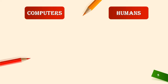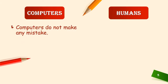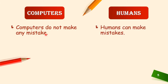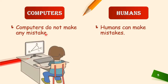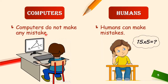Next: computers do not make any mistakes. If you want to add or multiply 10-digit numbers, human beings may get confused and make mistakes. But computers will never make any mistake. Computers do not make mistakes, but humans can.